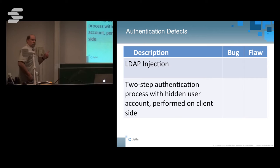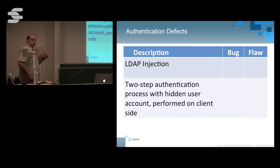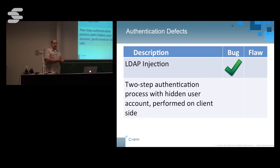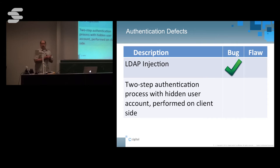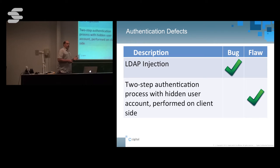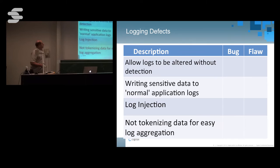If you were to consider LDAP injection — which one is it, a bug or a flaw? We view that as an injection attack. I supply data, I confuse the parser, I can start to control what's going to the log. That's a bug — it's an implementation bug. What about a two-step authentication process where there was some hidden account on the client, and as part of that second authentication mechanism, the client side performed the validation? That's a flaw — just a broken design. We can't do client-side controls; it's extremely hard to do a client-side control.